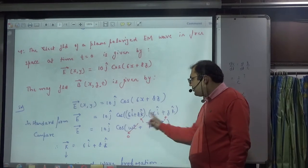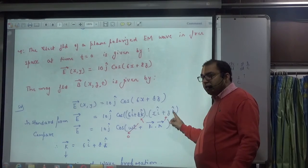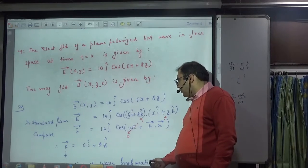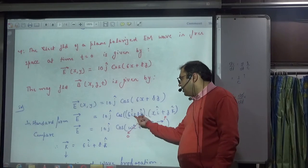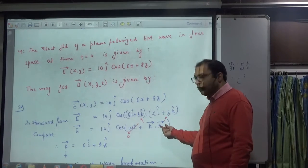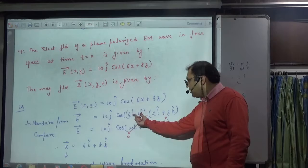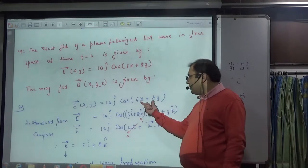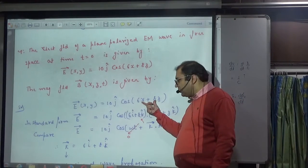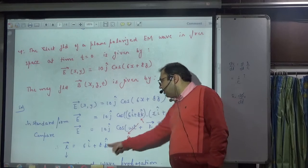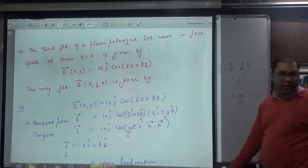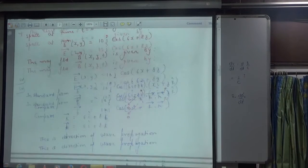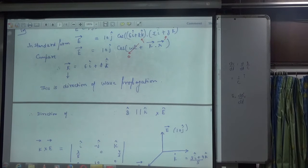When you take this dot product, the answer will be exactly the same expression. So this becomes k-vector, and this becomes r-vector. There is no need to do many steps — if I give you this equation, you directly write k-vector as 6i-cap + 8k-cap. k-vector means wave propagation direction.